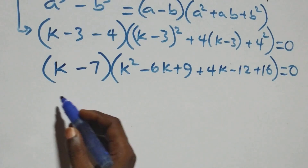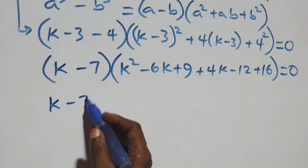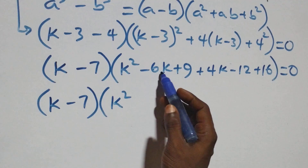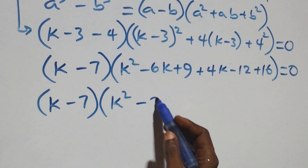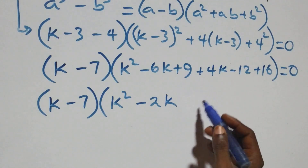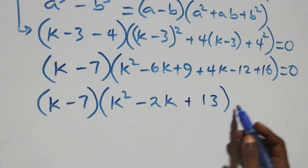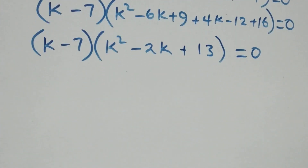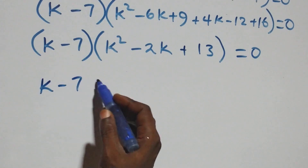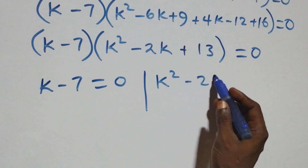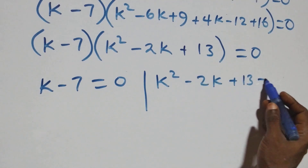This gives (k - 7) times [k² + (-6k + 4k) = -2k, then 9 minus 12 plus 16 gives plus 13], close bracket, equals zero. So we have two possible cases: k - 7 = 0, or k² - 2k + 13 = 0.